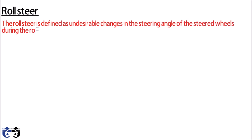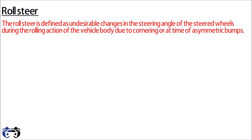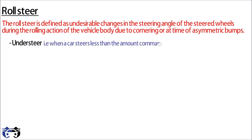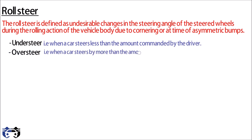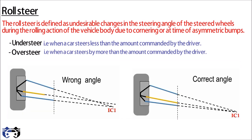Roll steer is defined as undesirable changes in the steering angle of steered wheels during rolling action of the vehicle body due to cornering or asymmetric bumps. Roll steer can cause understeer — when a car steers less than the amount commanded by the driver — or oversteer — when a car steers more than the amount commanded by the driver. Basically, roll steer is the error caused due to improper angle of the tire, where the instantaneous center of the tire is not matching with the instantaneous center of the suspension control arms.